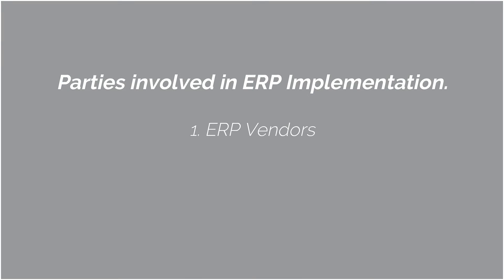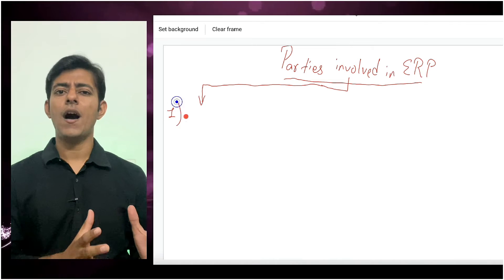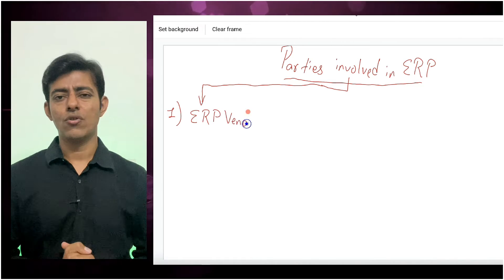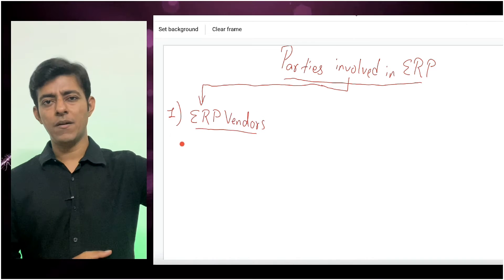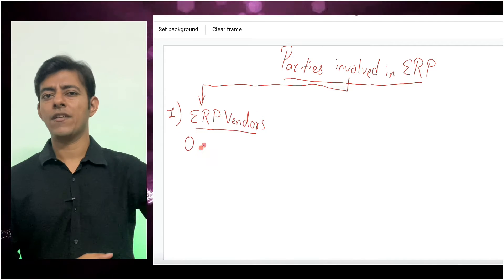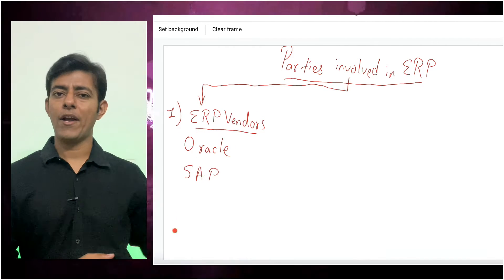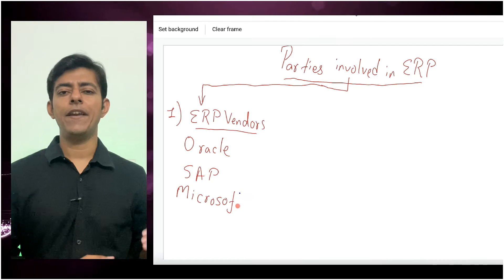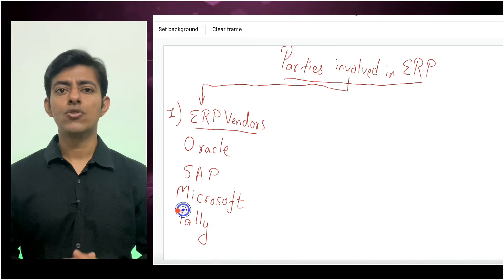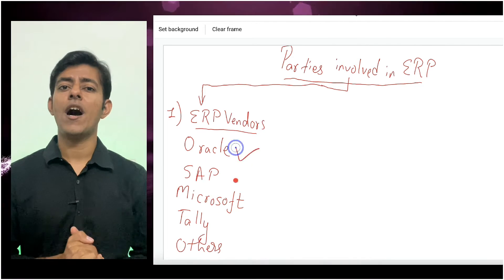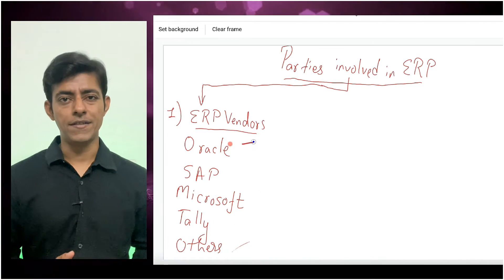Now it is moving on to cloud. This ERP system is sold by various different types of companies. For example, Oracle ERP is one company. Then there is SAP, which also has their own ERP. Microsoft has their own ERP, and in India, we have Tele ERP.